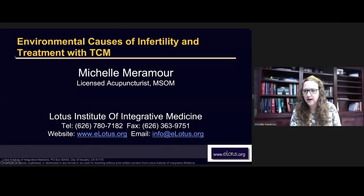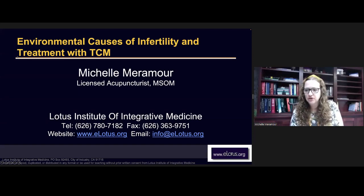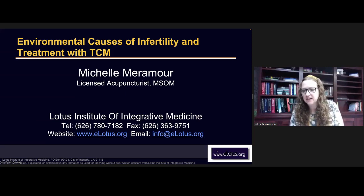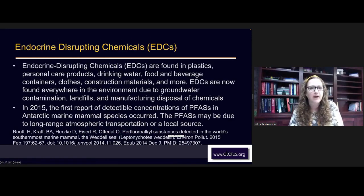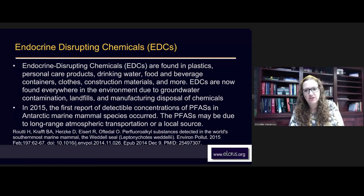We're now starting the actual class on environmental causes of infertility and treatment with TCM. Let's talk about what endocrine disrupting chemicals are. Endocrine disrupting chemicals are found in plastics, personal care products, drinking water, food and beverage containers, clothes, construction materials, and more. They are now found everywhere in the environment due to groundwater contamination, landfills, and manufacturing disposal of chemicals.